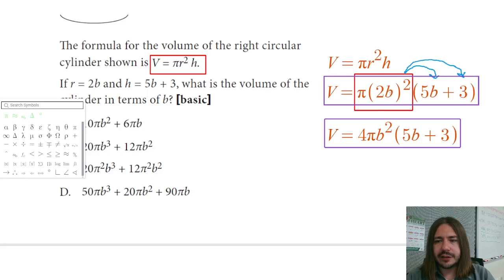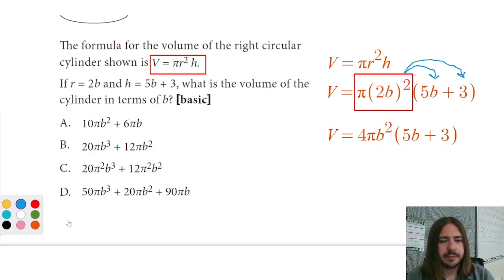So now I've got this term that I'm going to distribute. I'm ready to do the distributive property here. I'm going to take this entire term - it looks pretty big, but I'm going to multiply that by both 5b and by 3.